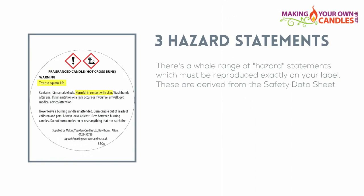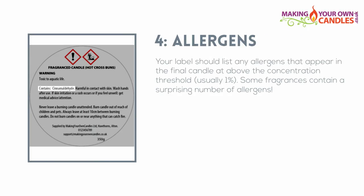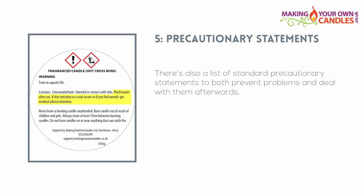Your label must also include all the appropriate hazard statements. These have specific wording which you must reproduce exactly on your label. You can work out which hazard statements you need to include from the safety data sheet of the fragrance. Your label should also list any allergens that appear in the final candle above the concentration threshold — this is usually 1%. There's also a range of standard precautionary statements to both prevent problems and deal with them afterwards, and as with the hazard statements you must reproduce these exactly using the official wording.